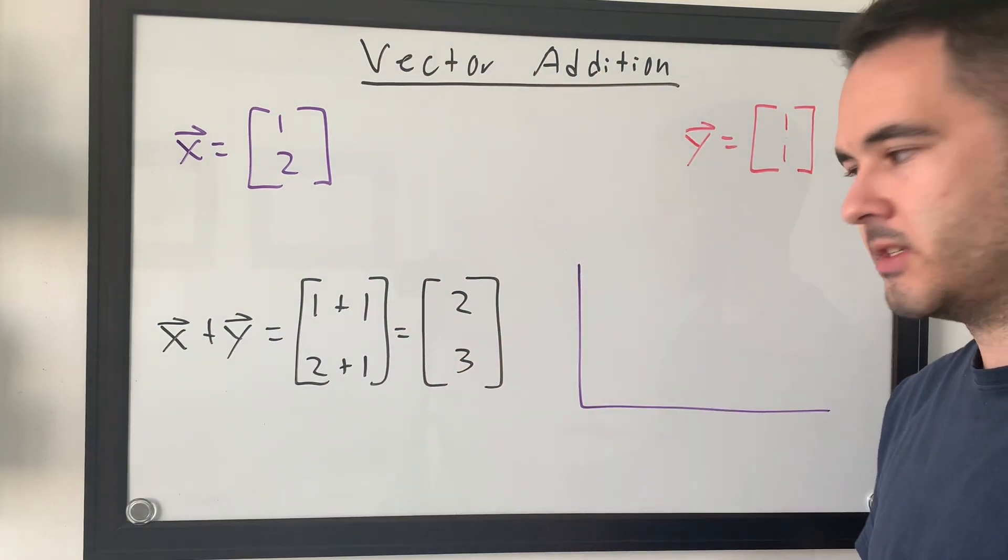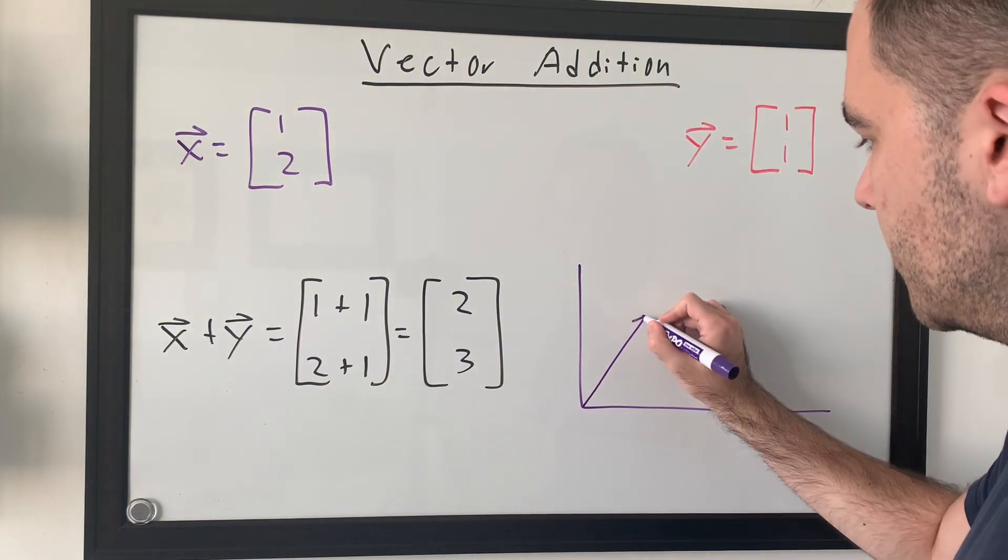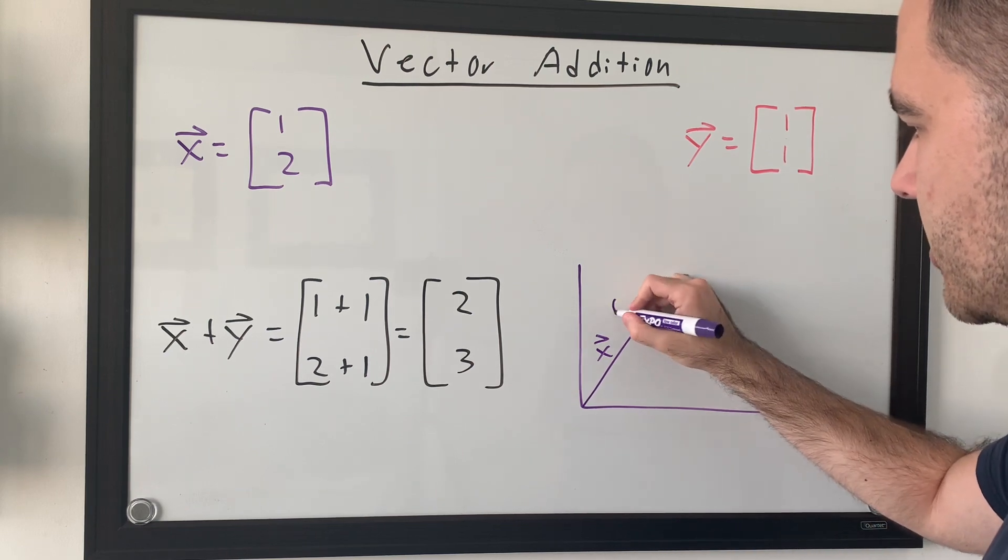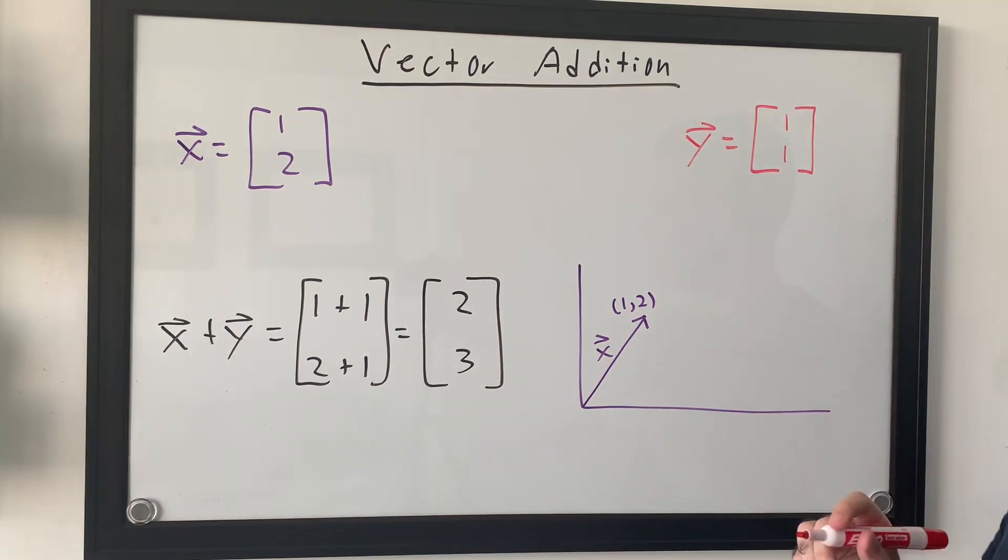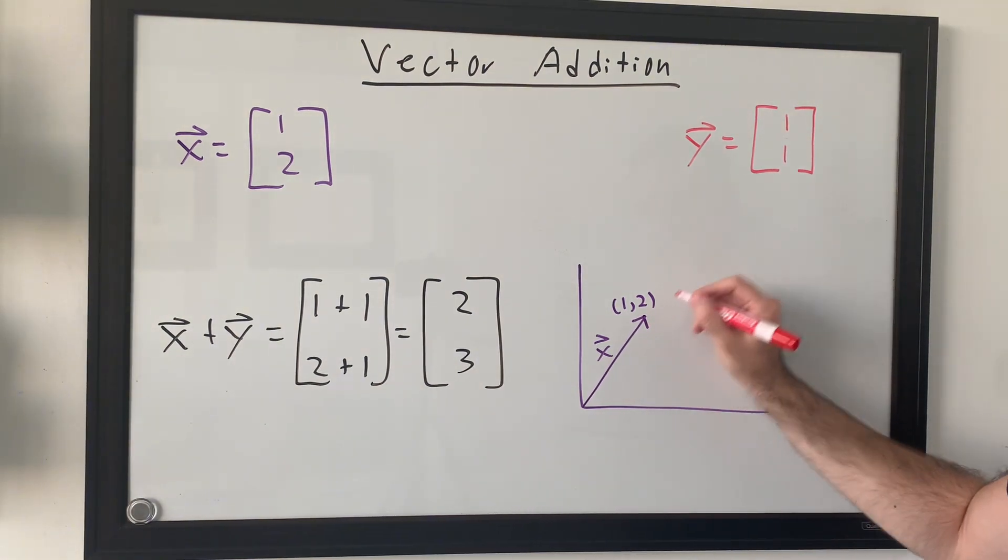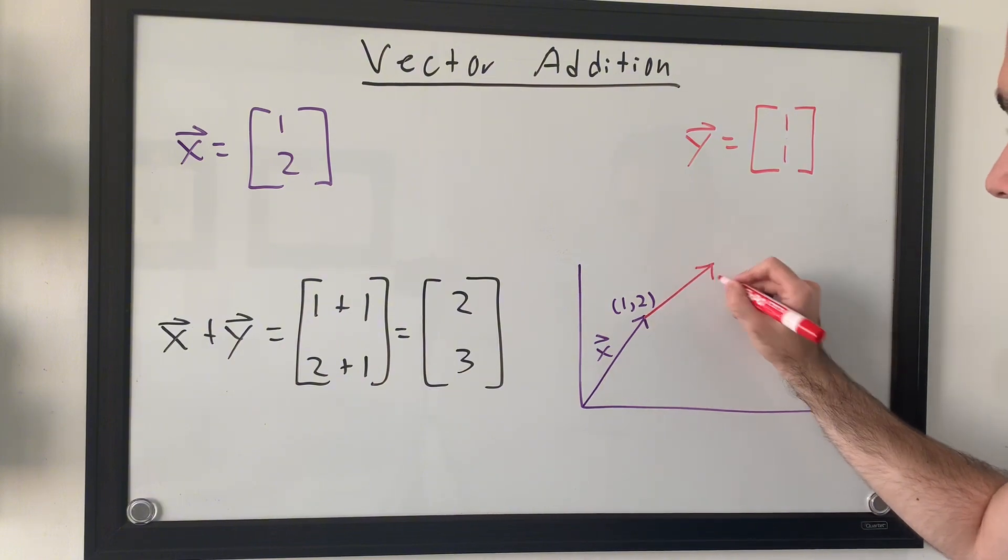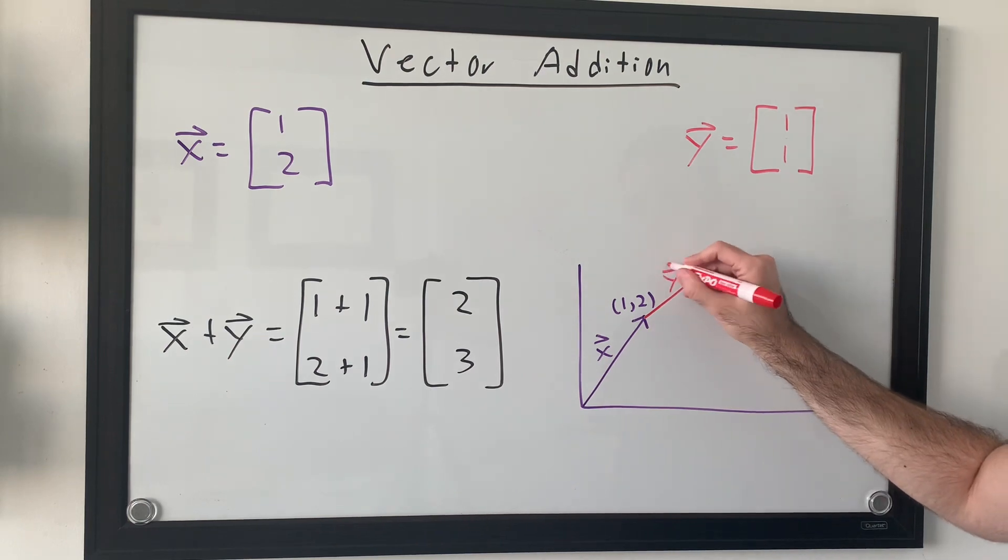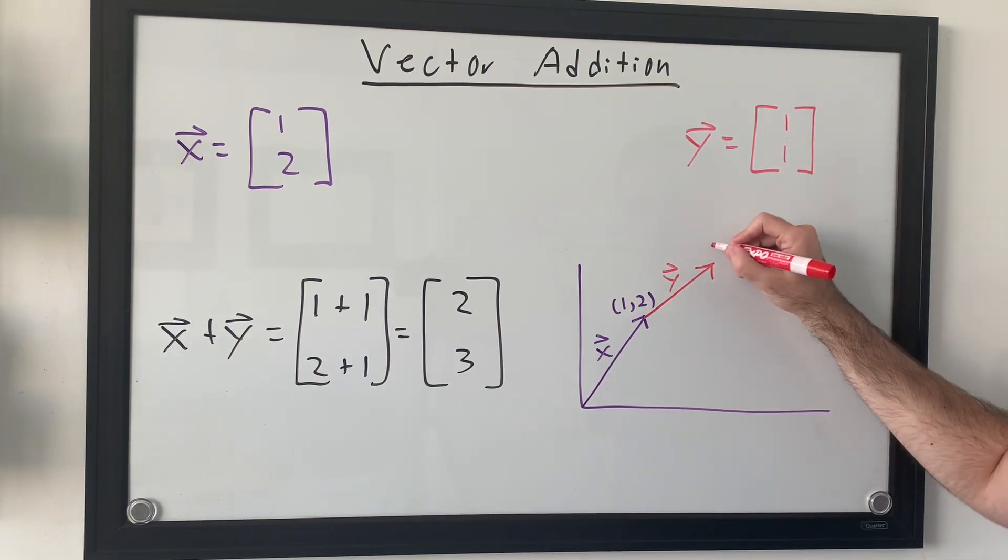However, visually, what does this mean? Basically, if I were to take the first vector X and draw it, I would see I would end up at the point 1, 2 here. And when we add Y to this, we're going to draw the vector after X as if we're following the first path of X and then following the next path of Y.